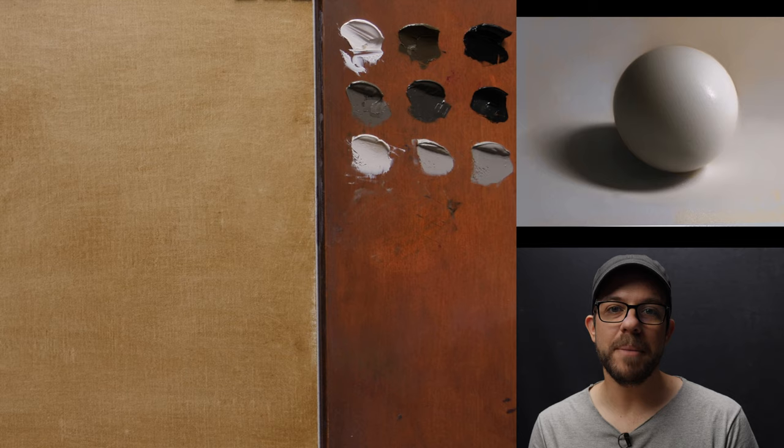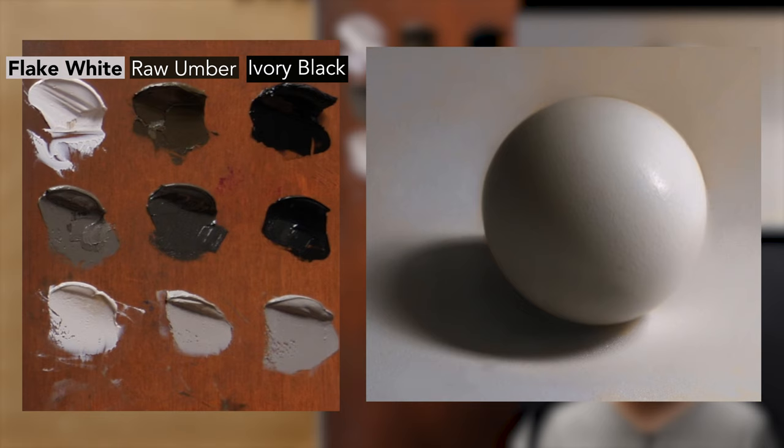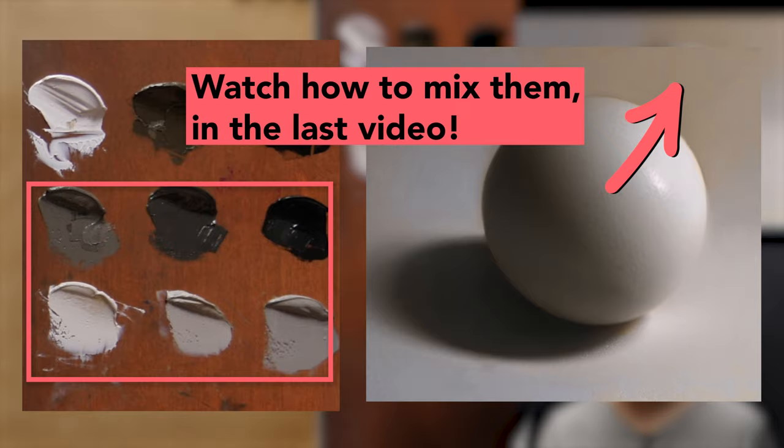The painting that we're going to make is going to be a grisaille and you can see I've got my grisaille palette set up here. Three pure pigments up here: ivory black, raw umber, and flake white. Then I have six sub-mixtures that I've made out of those that are kind of a neutral tone gradient that goes from very dark to very light.